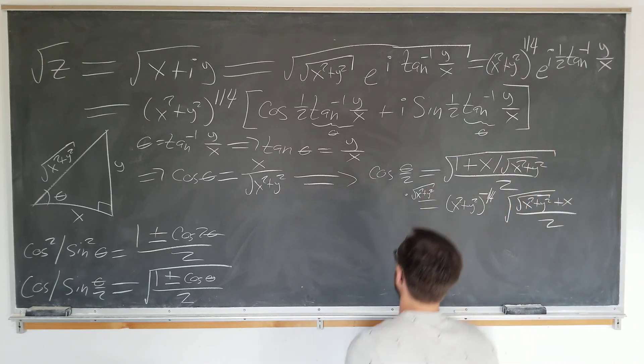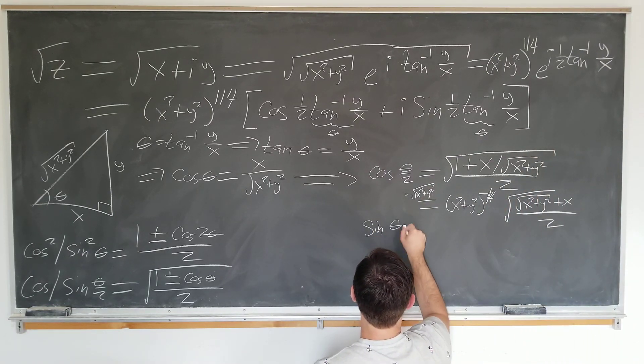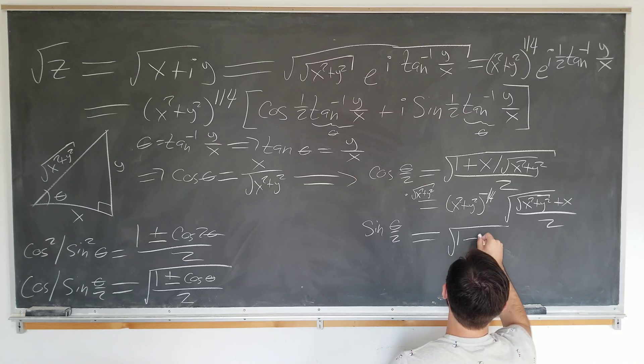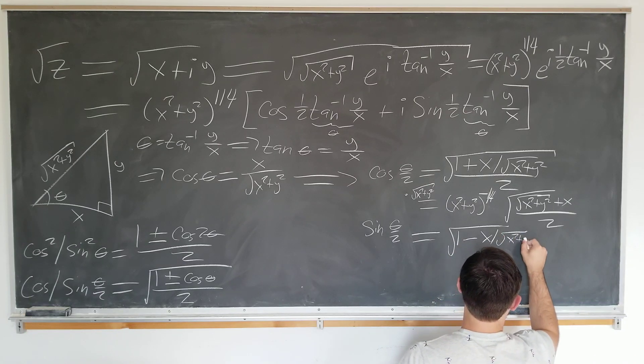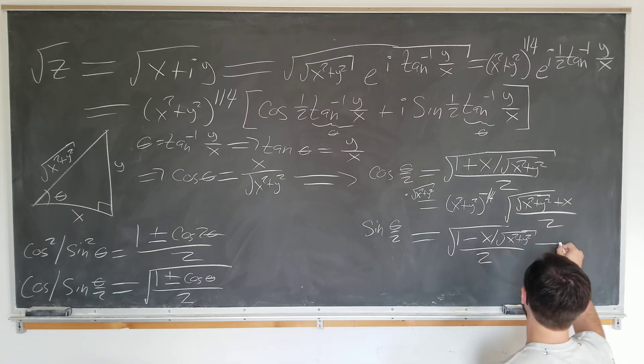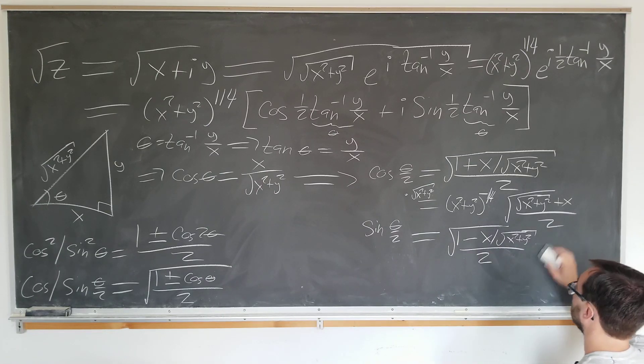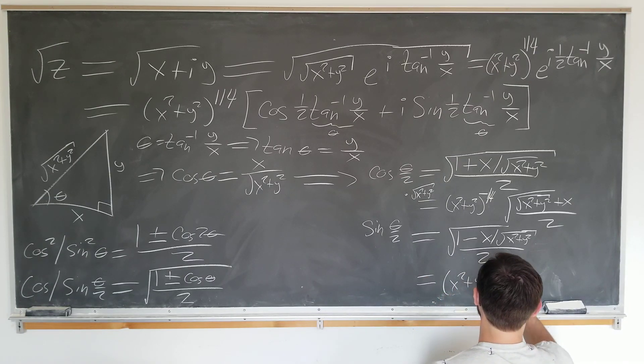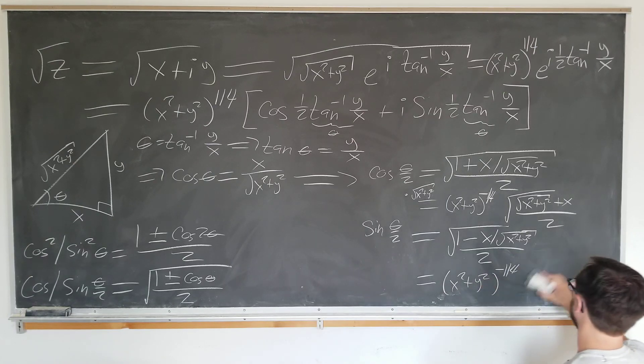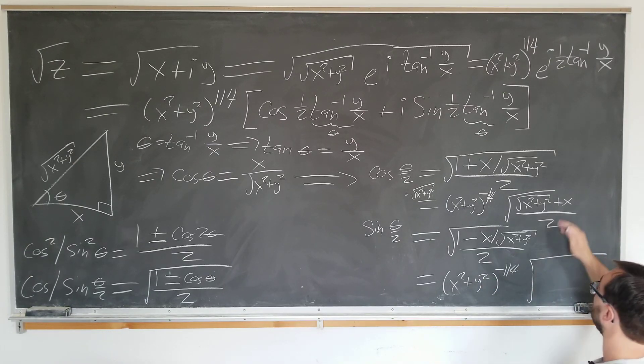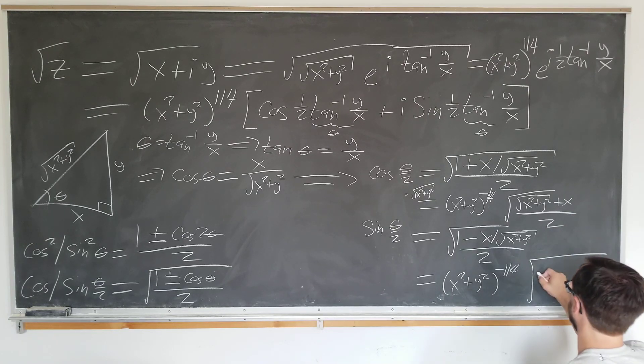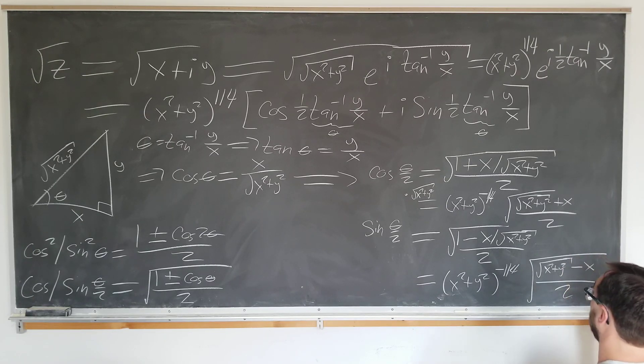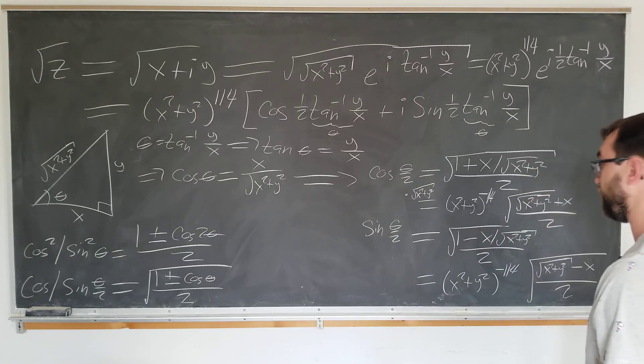And similarly, we can find that sine of theta over two is just going to be one minus x over the square root of x squared plus y squared over two, which we can similarly simplify to be x squared plus y squared to the minus one quarter. And now we have the square root. It's the same as what we had above, but there's just a minus sign. Square root of x squared plus y squared minus x over two. And this is all we need to evaluate the final result.